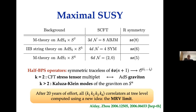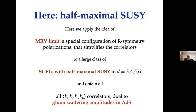After 20 years of efforts since the very start of AdS/CFT, all four-point functions between arbitrary Kaluza-Klein levels are now known at tree level, thanks to a new idea introduced last year by Fernando and Shinan — known as the MRV limit, which I will discuss later in the talk. What you should do next is move to theories with half-maximal supersymmetry. We apply this MRV limit idea to a large class of SCFTs with half-maximal supersymmetry in dimensions from three to six, obtaining all four-point functions between any half-BPS operators at tree level — dual to gluon scattering amplitudes in AdS.